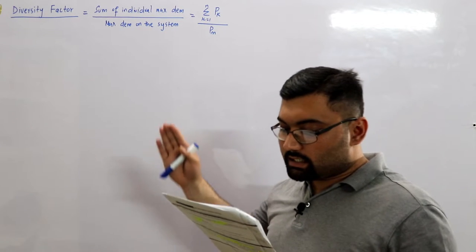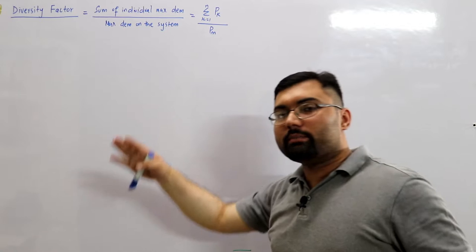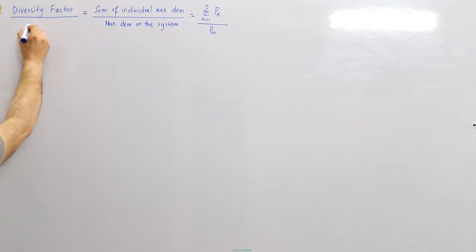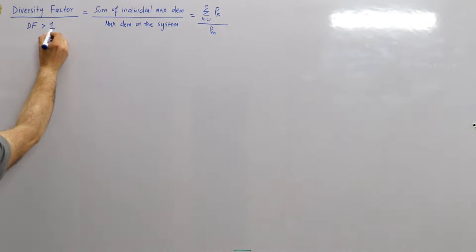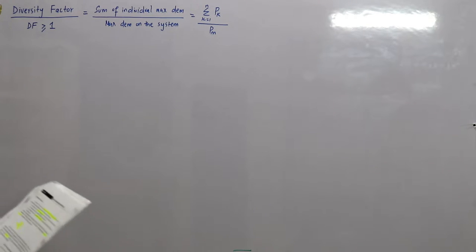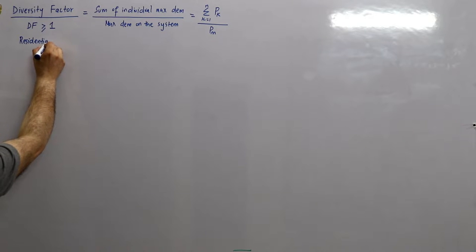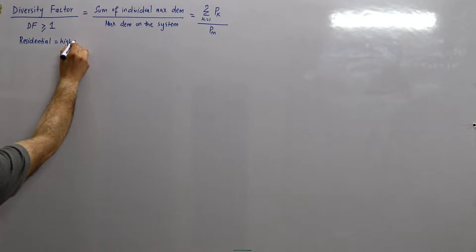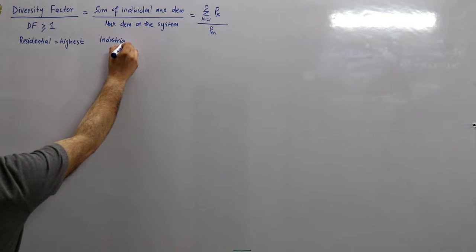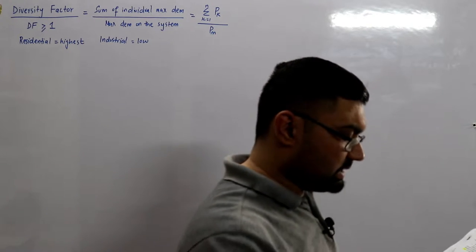Of course, the sum of all the individual maximum demands would be greater than the maximum demand of the system, which means the diversity factor DF is always greater than or equal to 1. Residential loads have the highest diversity factors, whereas industrial loads have lower diversity factors. Street lights have a diversity factor practically equal to unity, and other loads vary between these limits.